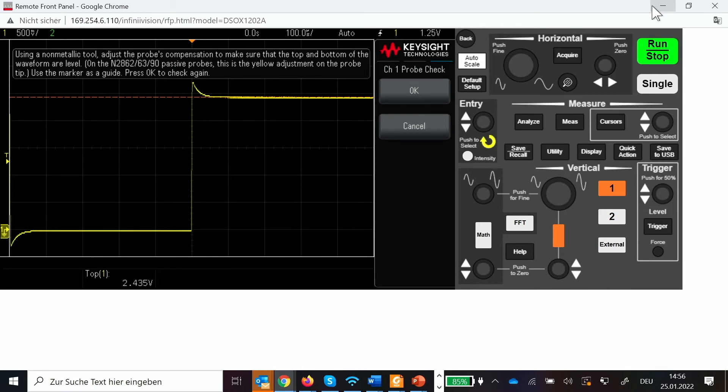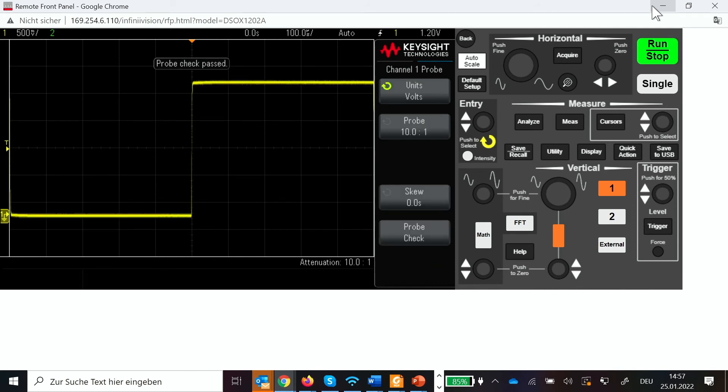You can see I can over-compensate it, under-compensate it, and if we have a straight line then we are very well compensated. Again I check, that is okay, and now we can see it's a very nice compensated signal.